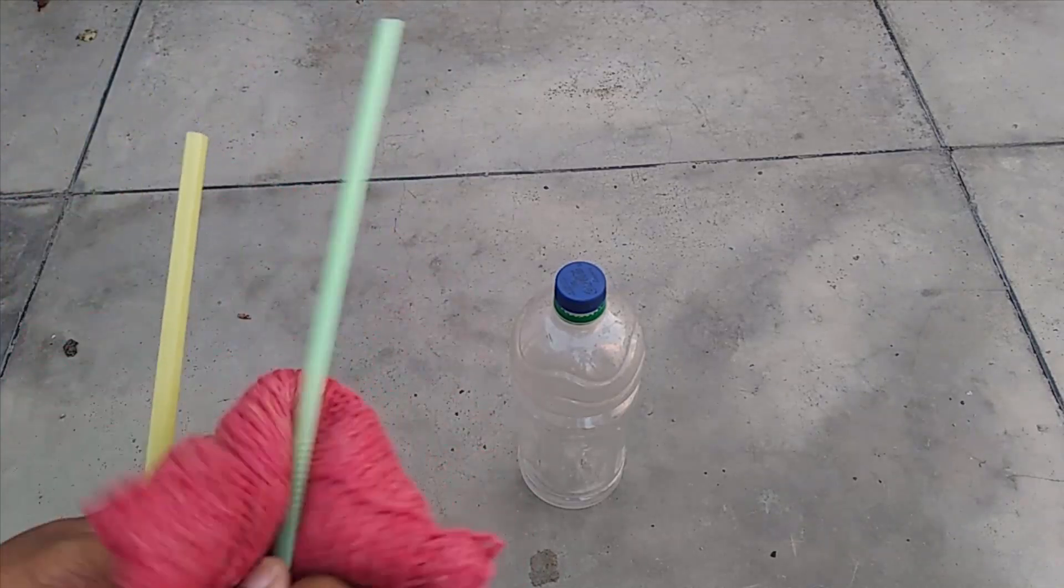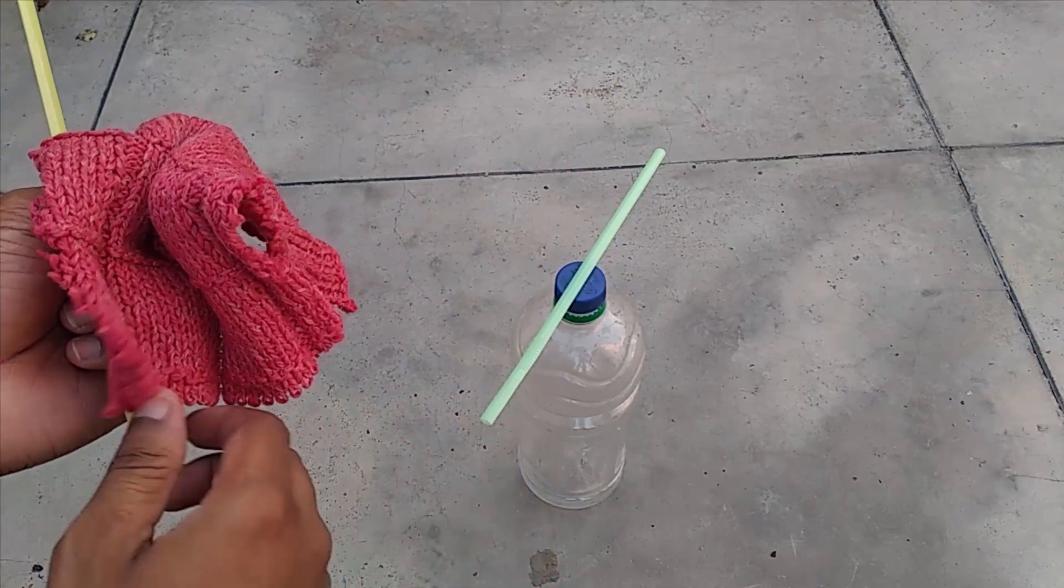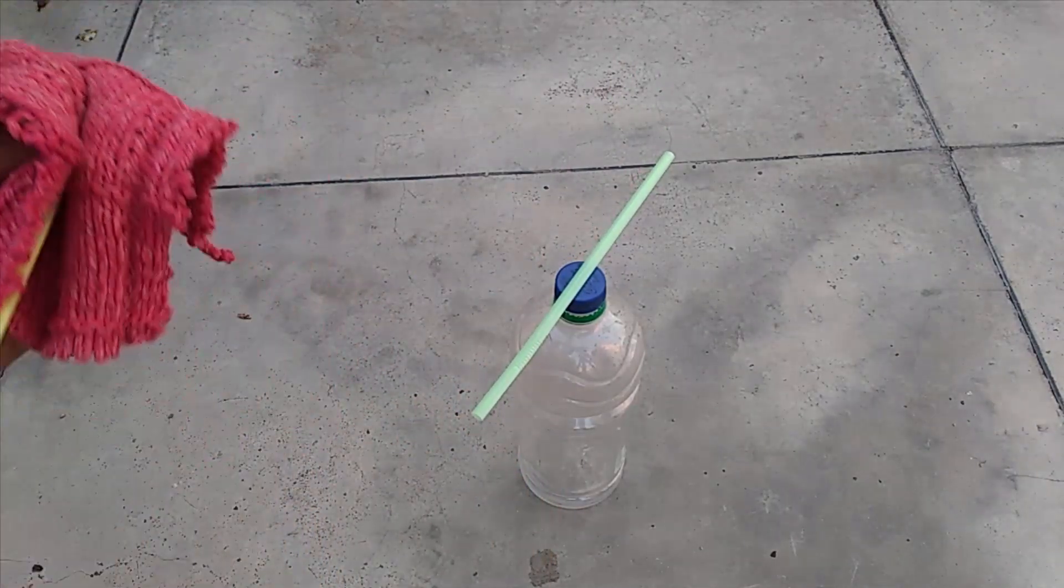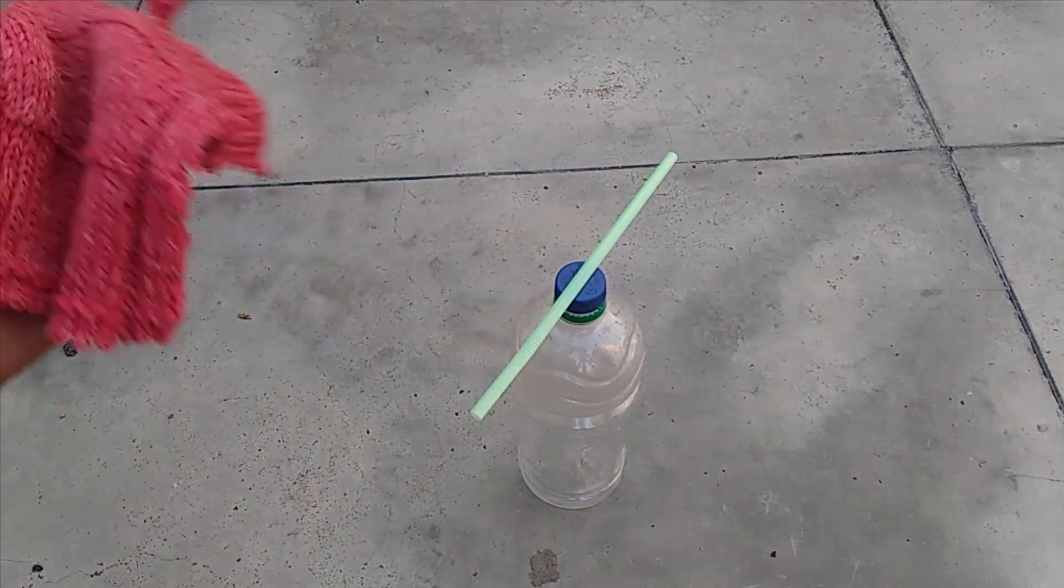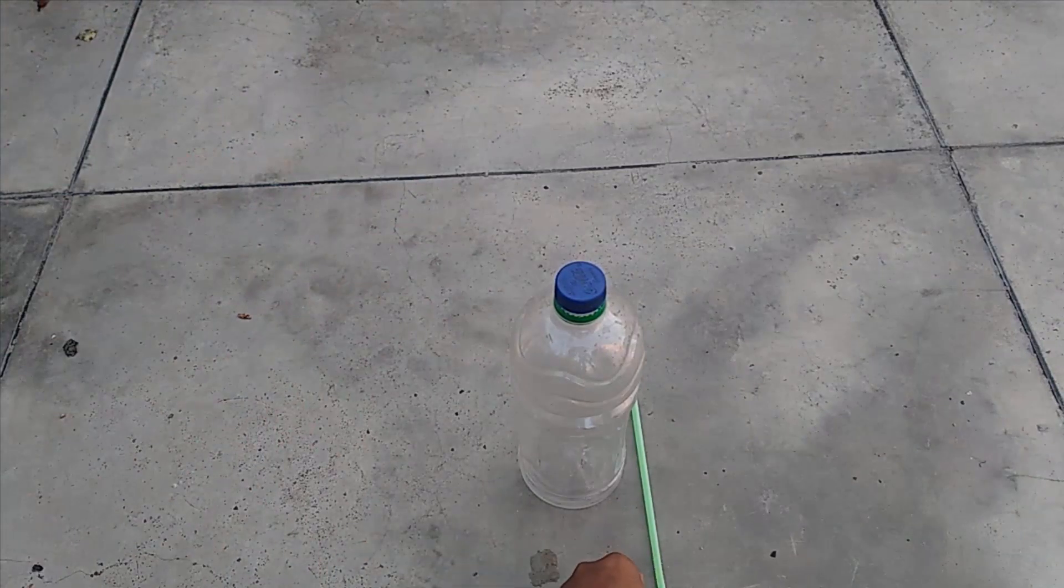Now what we have to do is rub the first straw and place it over the bottle. While rubbing the second straw, you can tell that both straws have the same kind of charge. If positive accumulates on the green one, positive will again accumulate on the yellow one because they are rubbed against the same material.